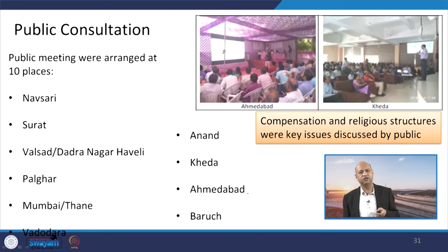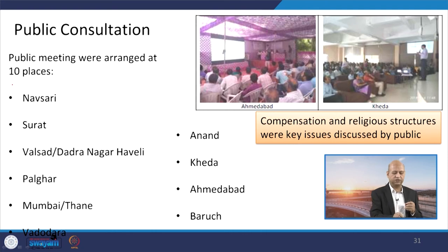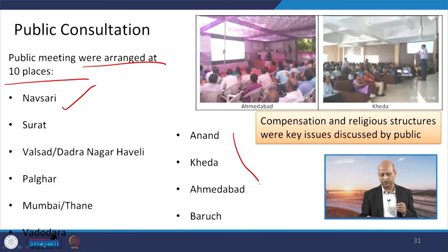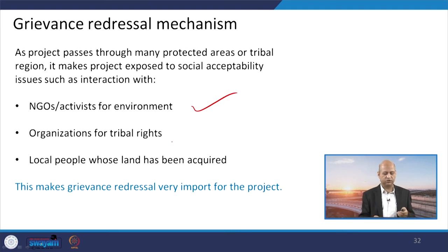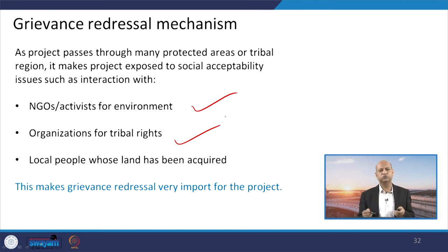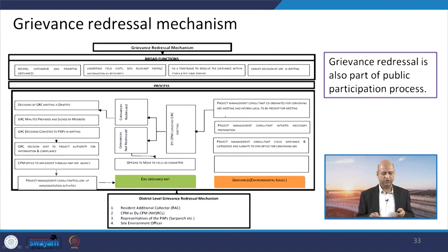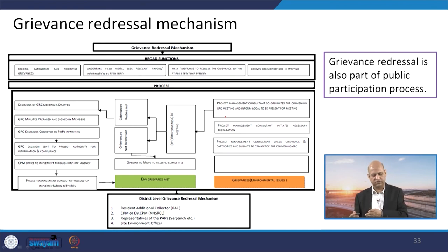Public consultation is an important issue because public participation makes a project successful. Public meetings were arranged at 10 places — Navsari, Surat, Valad, Palghar, Mumbai, Thane, Anand, Kheda, Ahmedabad, and Bharuch — and people were given proper information to avoid grievances. Issues raised by NGOs, activists, and organizations working for tribal rights and local culture were also properly listened to and addressed. A grievance redressal mechanism involving several responsible agencies and organizations was put in place.